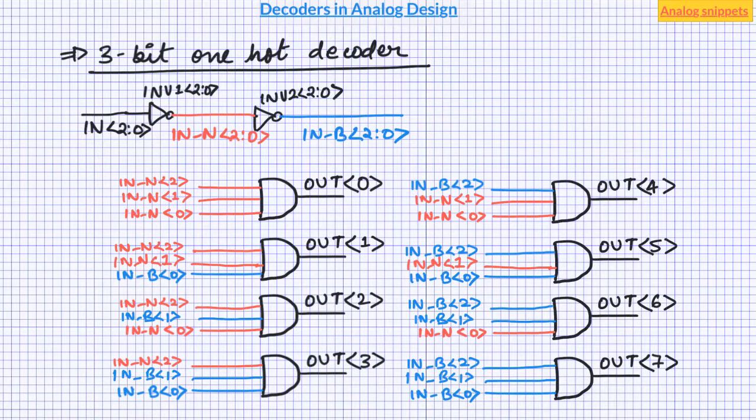To generate one-cold decoder we can put inverter after every AND gate, or we can simply replace all the AND gates by NAND gates. And finally to generate a decoder where outputs have all 0 for one combination we can simply remove one of the AND gates.